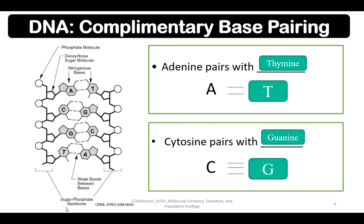Look at this: the weak bonds between the nitrogenous bases can be two or three. When adenine and thymine are paired, there are two weak bonds connecting the two nitrogenous bases. But when cytosine and guanine are paired, there are three weak bonds.